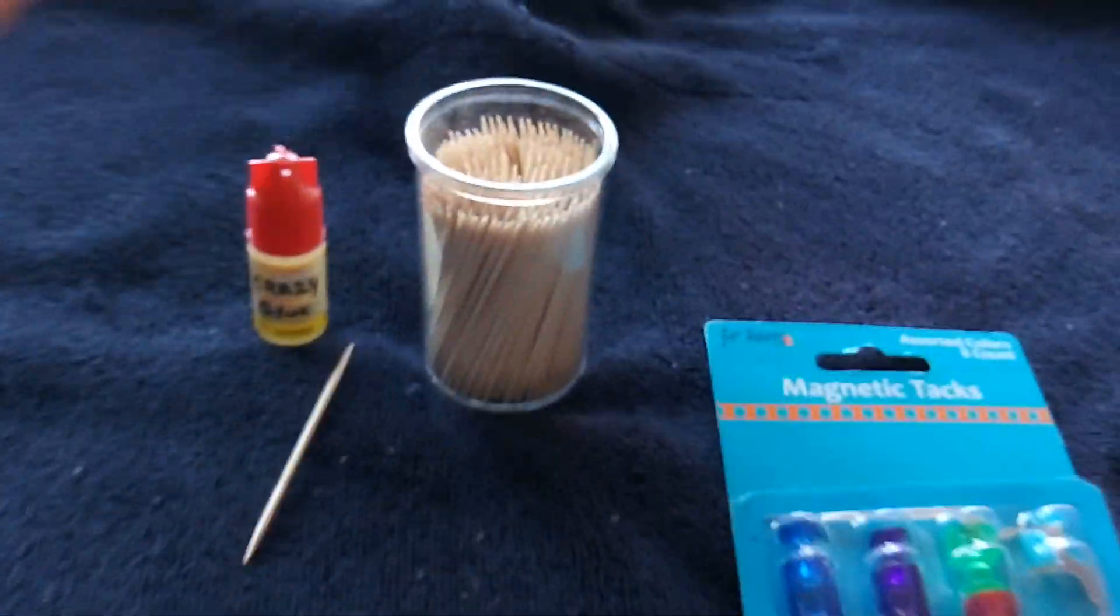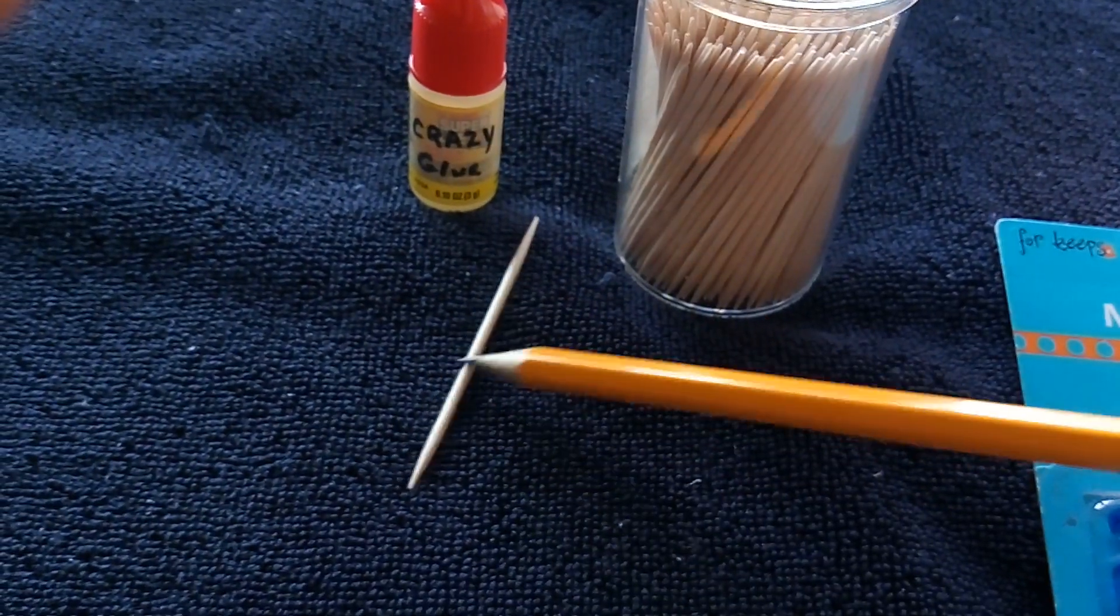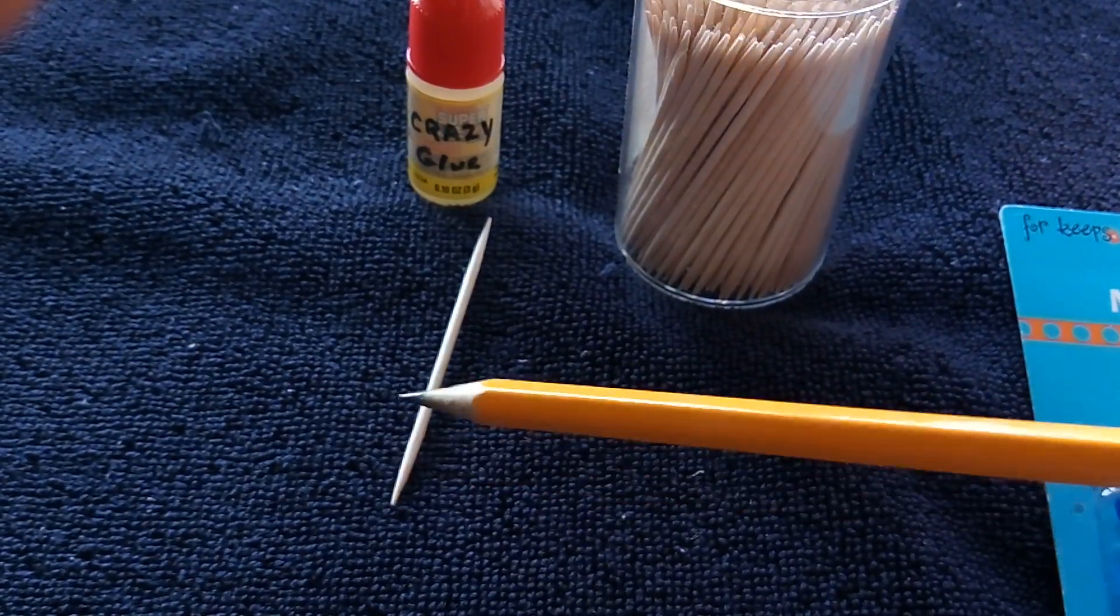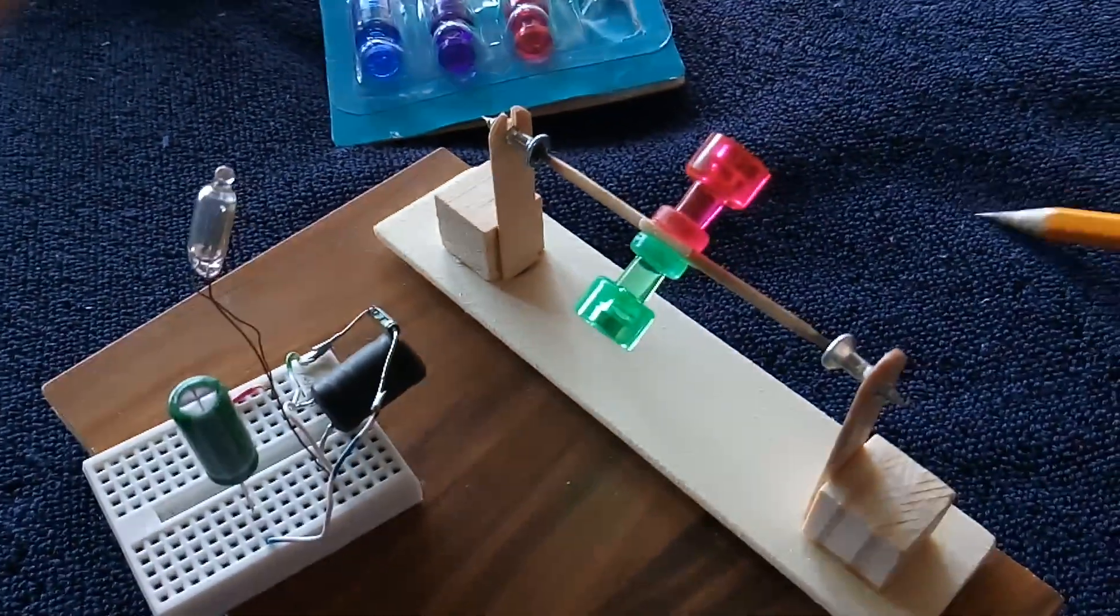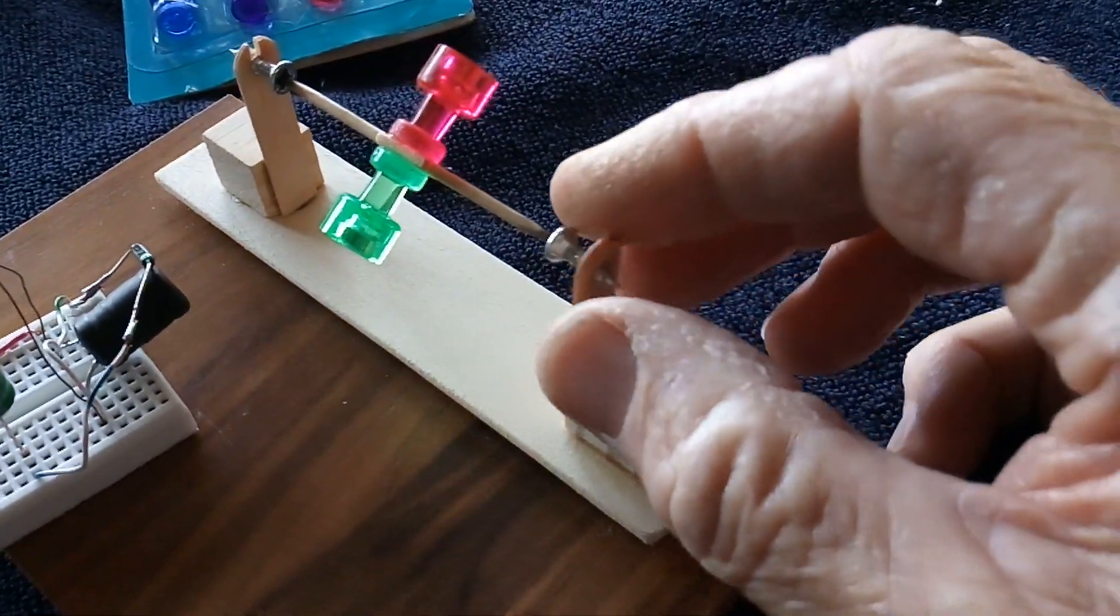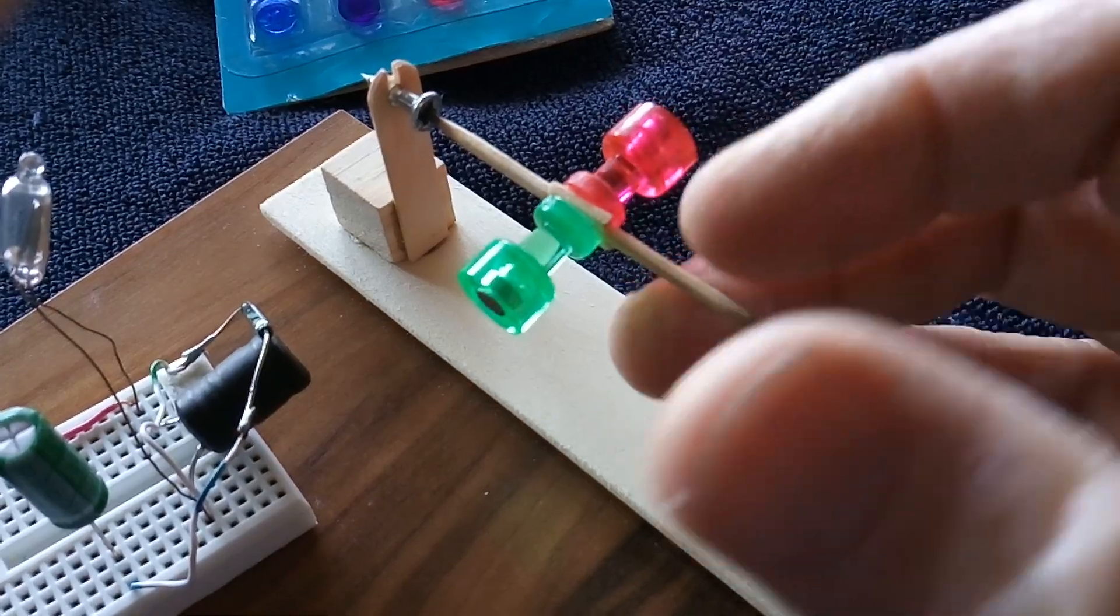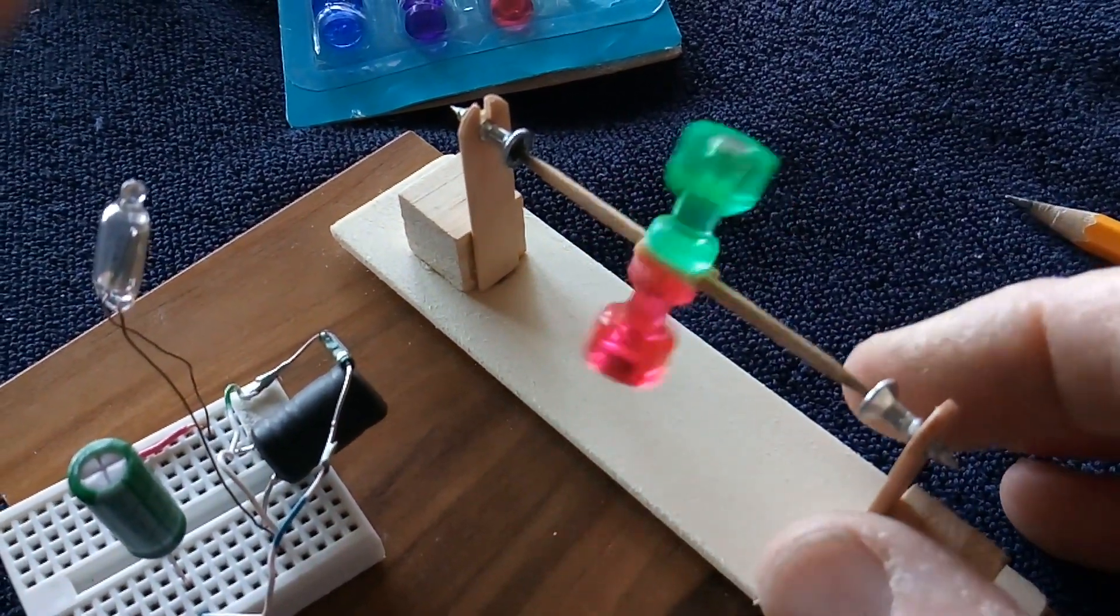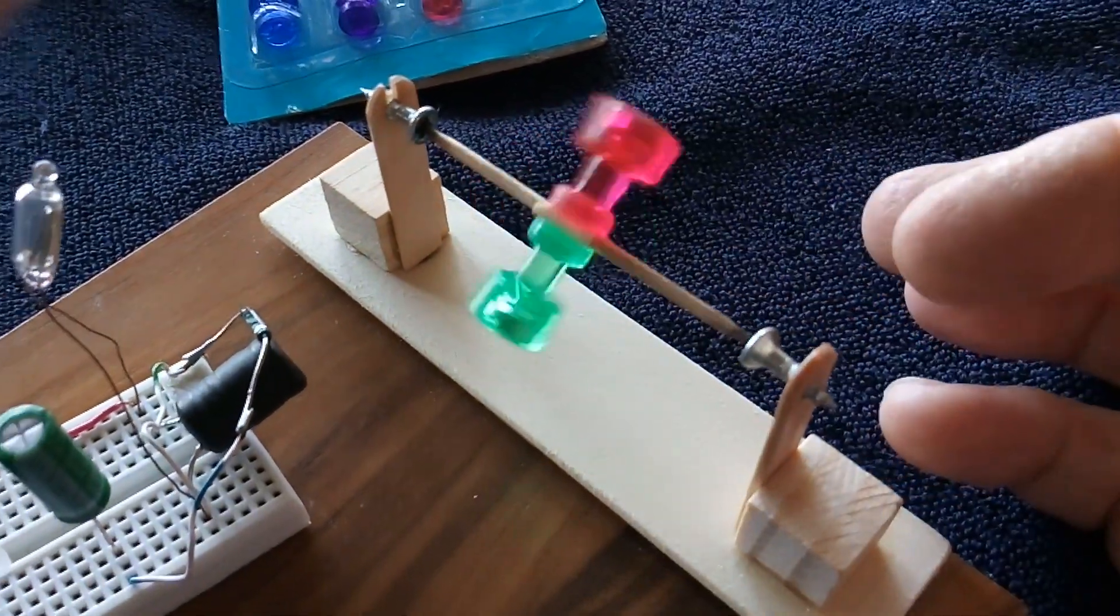I'm still using the toothpick thing here. I'm fascinated by the idea that you can just take a round toothpick and use it for your rotor shaft and suspend it in different ways. Here I'm using the Phillips screw idea where the toothpick sits in the crosshairs of the Phillips screw, and when you adjust this just right it makes a pretty interesting low friction bearing.